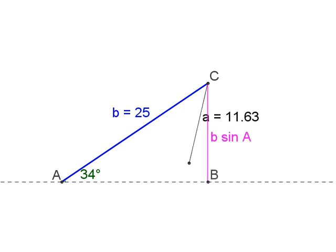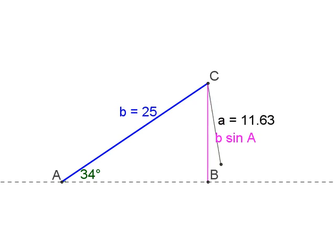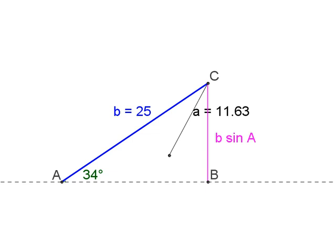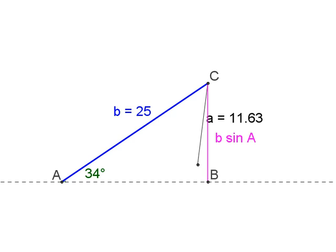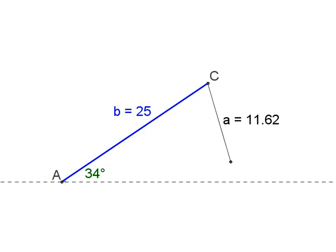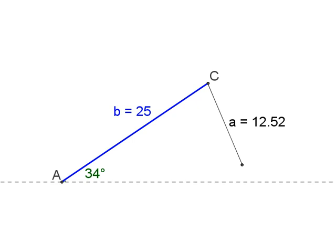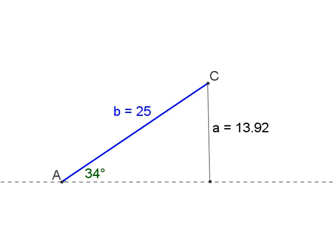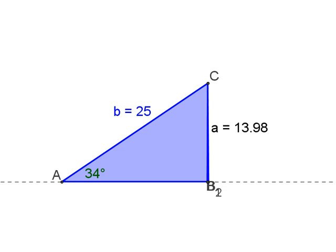I invite you to grab your calculator and compute b times sine of 34 degrees — with b = 25 here. In GeoGebra I can see I'm getting close, and it looks like just short of 14 I suddenly have a single triangle.